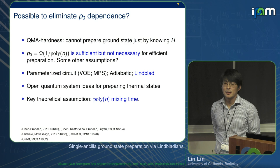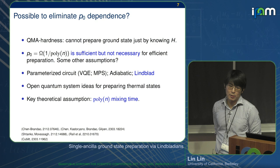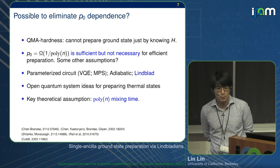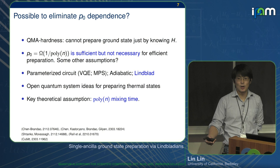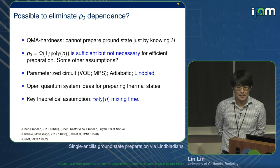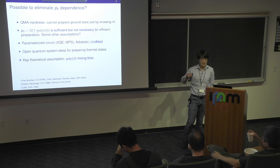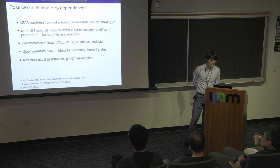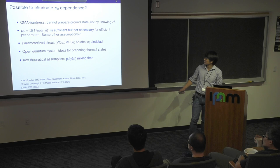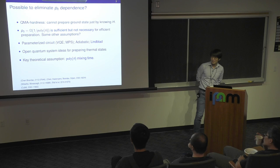By 'explicit' I mean the cost — for example if you run Lindblad, maybe the mixing time grows exponentially with respect to N, but you don't know that a priori. With explicit dependence, you know very clearly the cost will grow exponentially. That's the difference between explicit and implicit dependence. The key theoretical assumption is that we hope the mixing time grows polynomially in N. We don't have a lot of evidence so far, and that really determines whether in 20 years we're still very excited or less excited about it.